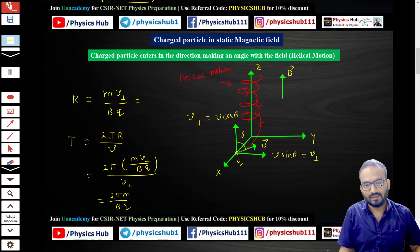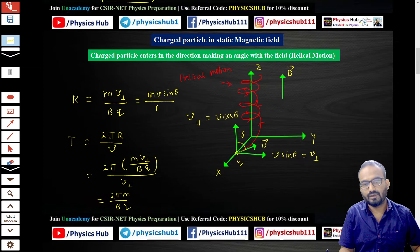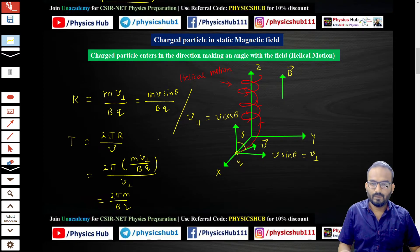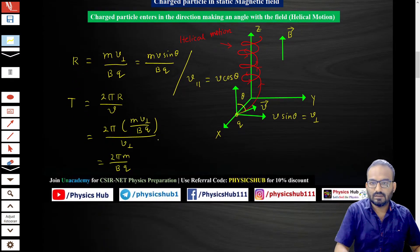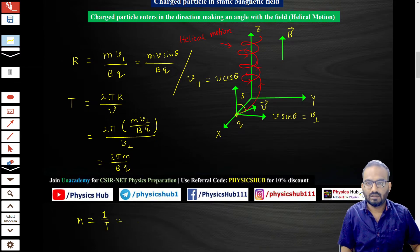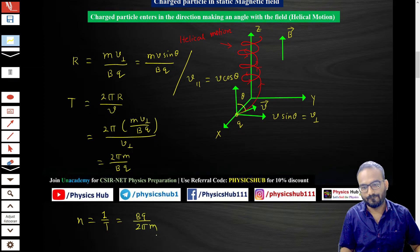The radius can also be written as r = mv·sinθ / bq. The frequency, which is the reciprocal of the time period, is f = bq / 2πm.